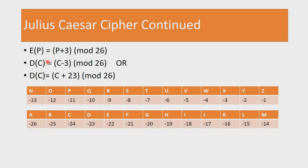To represent this in terms of a formula: the encryption of an element p is equal to p plus 3, mod 26. Since our key in the Julius Caesar cipher is 3, to encrypt any plain text element we simply add 3 to it and represent the answer in mod 26. Decryption, which is the opposite of encryption, is done by subtracting 3 from the cipher text element.